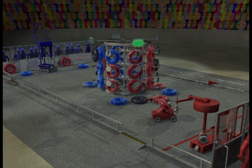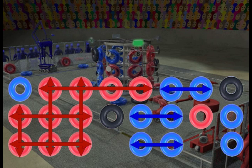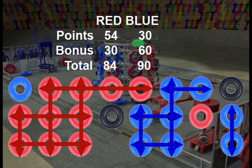The final score is determined by the length and number of rows created by game pieces, and added to the bonus points. In this example, blue squeaks out a win over red, 90-84.